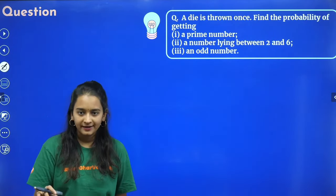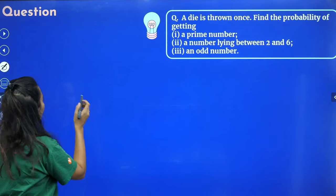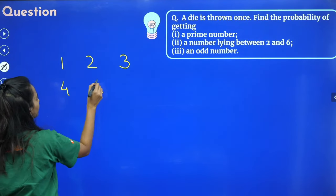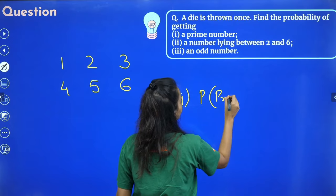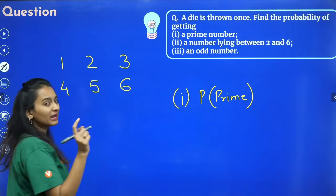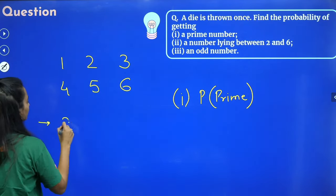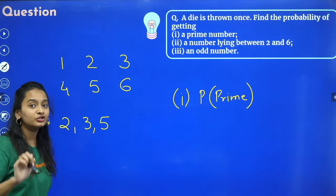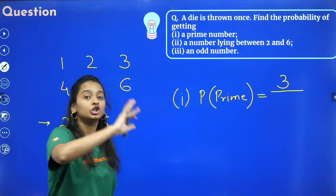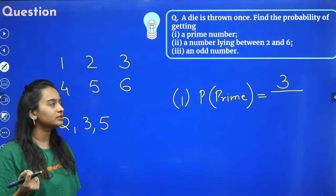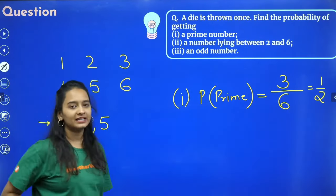A die is thrown once. Find the probability of getting a prime number. On a die, possible outcomes are 1, 2, 3, 4, 5, 6. Note that 1 is neither prime nor composite. Prime numbers on a die are 2, 3, and 5 — that's 3 prime numbers. So probability of prime = 3/6 = 1/2.